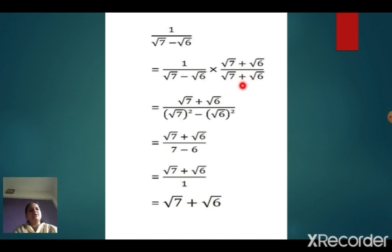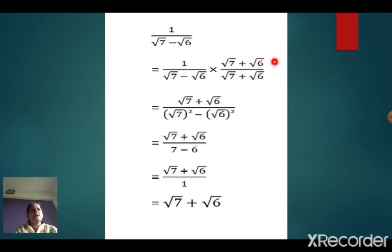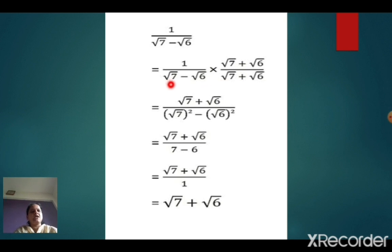We will multiply numerator and denominator by root 7 plus root 6 upon root 7 plus root 6. So what will be the numerator? 1 into root 7 plus root 6 will remain as root 7 plus root 6. Now concentrate on the denominator — can you see the identity form? Yes, this is a minus b into a plus b, and the formula is a squared minus b squared.